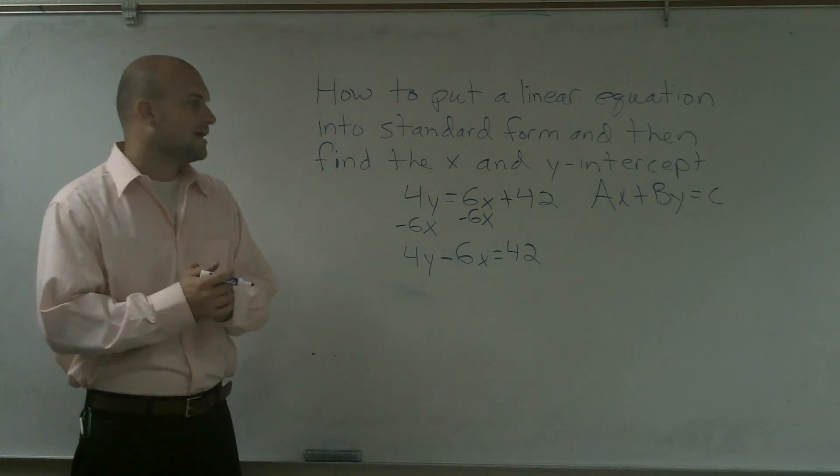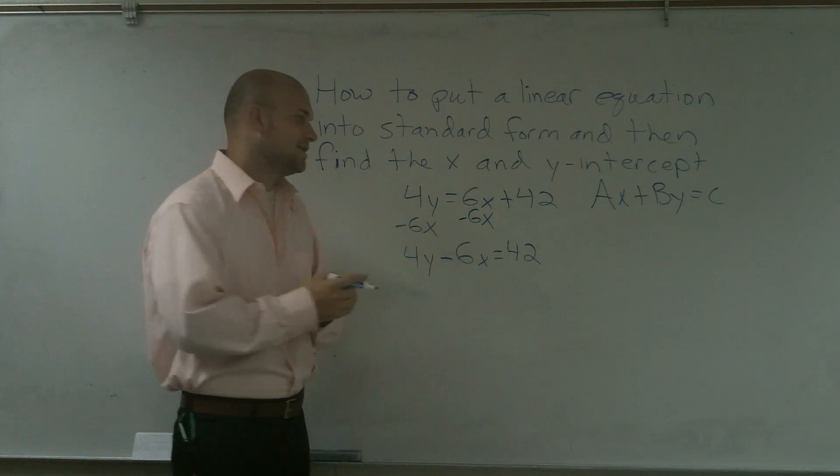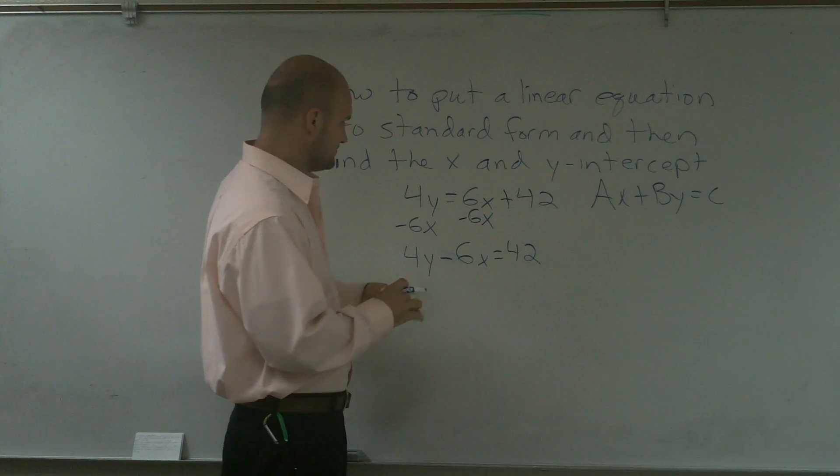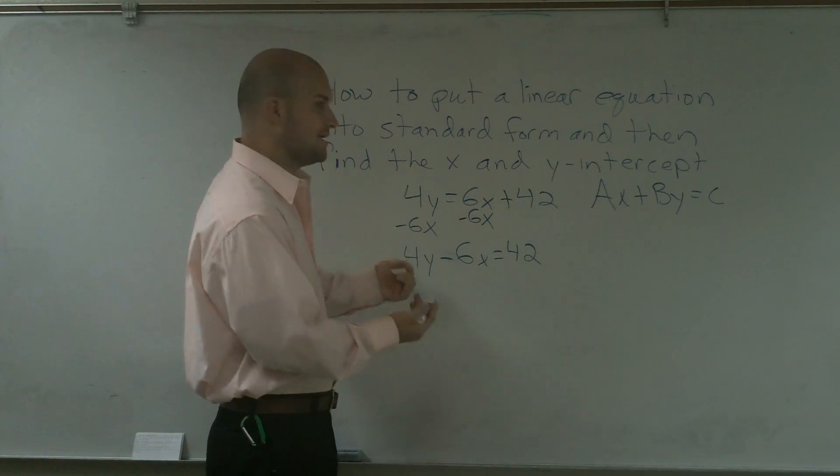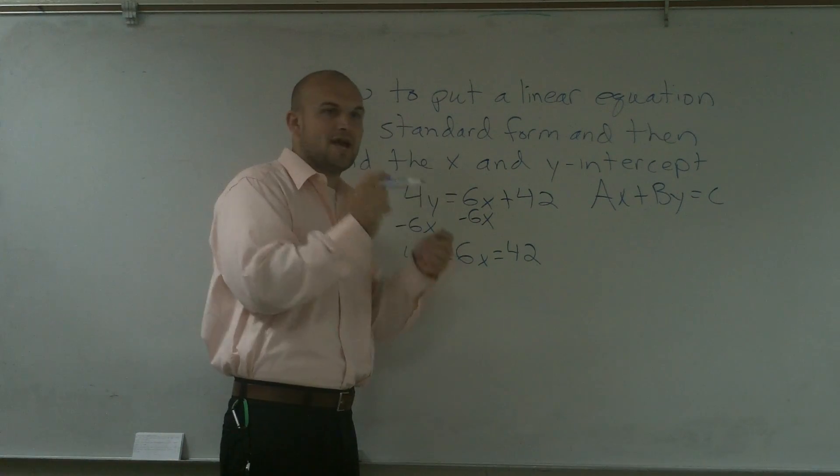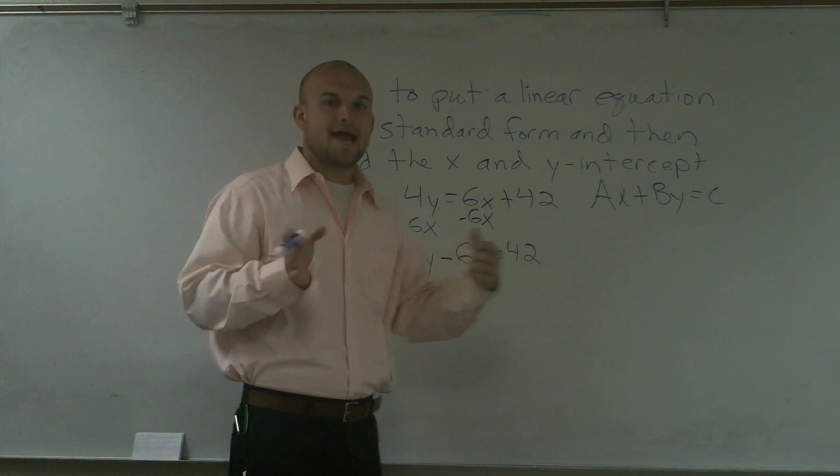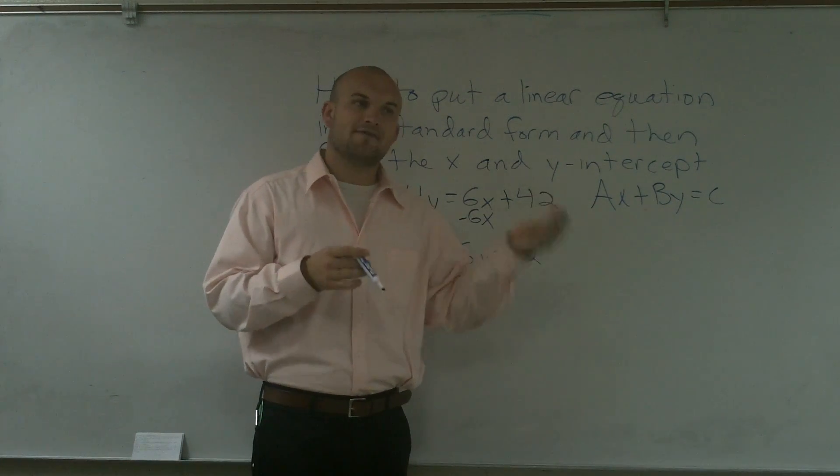Then the next thing it says is find the x and y intercept. If you guys can remember the x and y intercept on a graph, when you're trying to find the x and y intercept, at the y intercept your x value is 0, and at the x intercept your y value is 0.